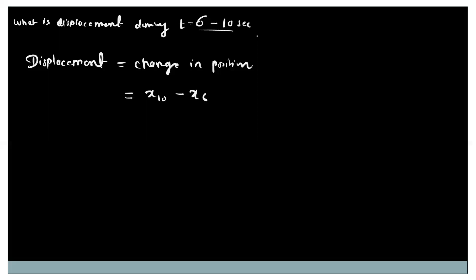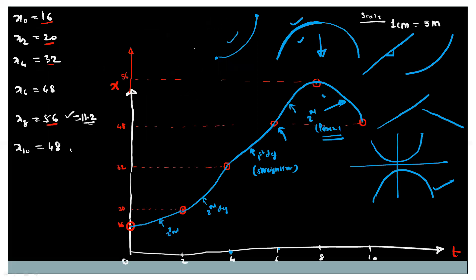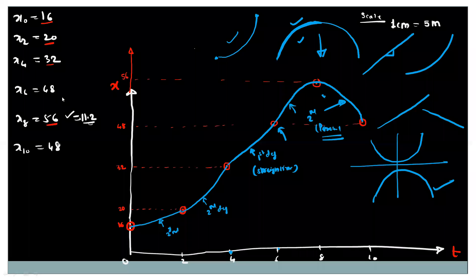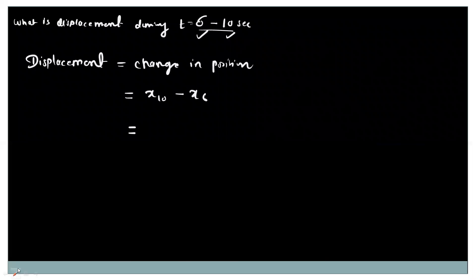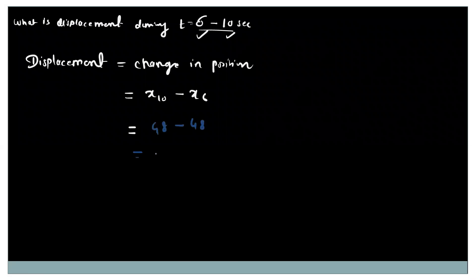We want to find the displacement during the time interval t=6 to t=10 seconds. Displacement is the change in position: final position minus initial position, so it is x10 minus x6. x10 equals 48 and x6 also equals 48, so the net displacement is 48 minus 48, which equals 0 meters.